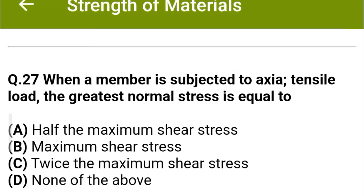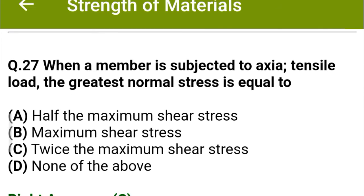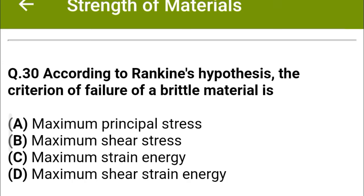Next question: When a member is subjected to axial tensile load, the greatest normal stress is equal to — option A: half the maximum shear stress, option B: maximum shear stress, option C: twice the maximum shear stress, option D: none of the above. The correct answer is option C: twice the maximum shear stress.